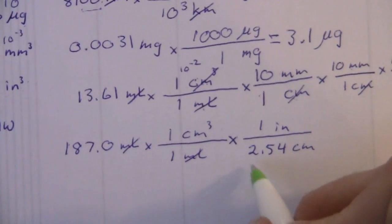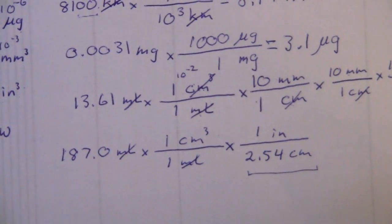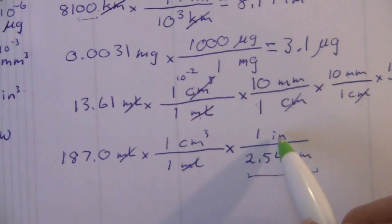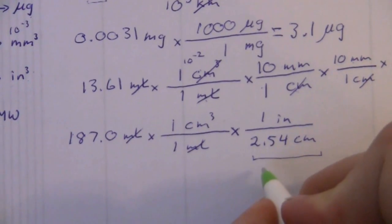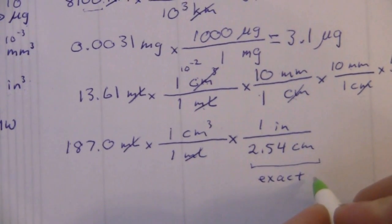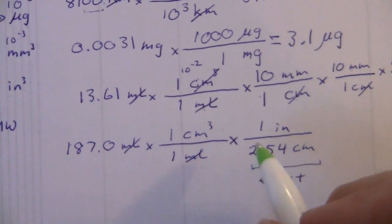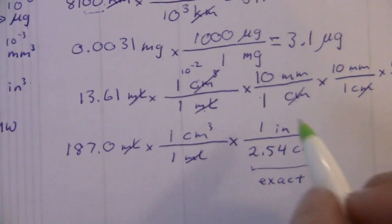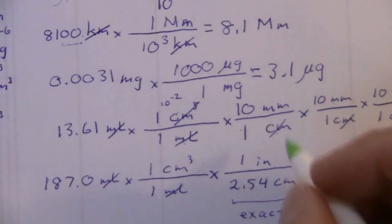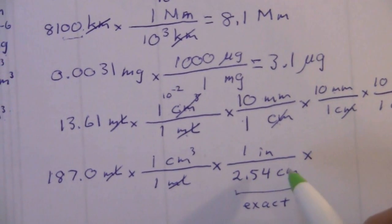The conversion factor that you need here is 2.54 centimeters in one inch. This is a good number to remember—that's a good thing to know: 2.54 centimeters per inch. It also happens that this is an exact number. It's actually defined—there are exactly 2.54 centimeters per inch.